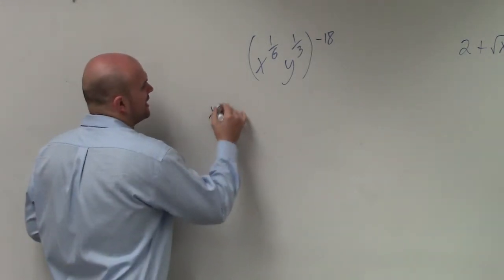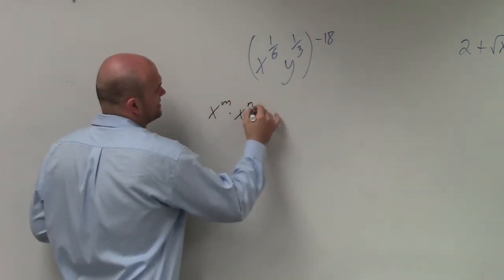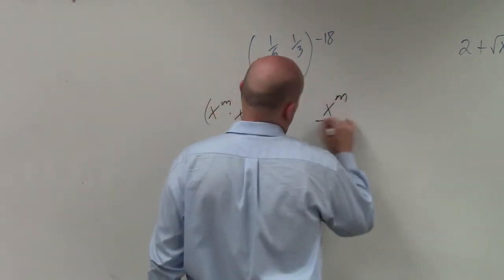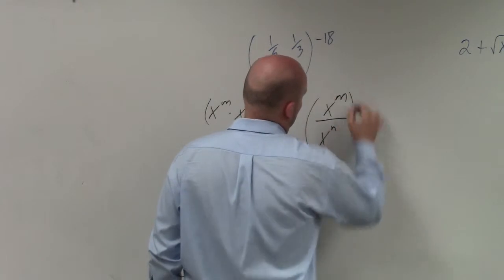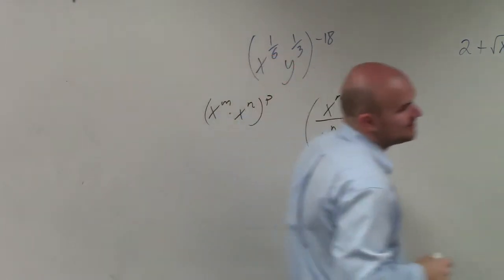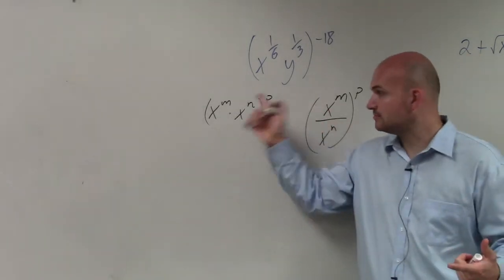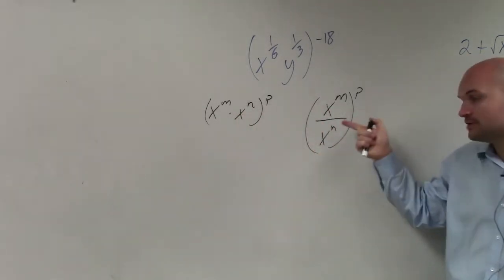The two rules are x to the m times x to the n raised to the p, as well as x to the m over x to the n raised to the p. What the name of these two rules are, which we've already written down, is what we call the power to product and power to quotient.